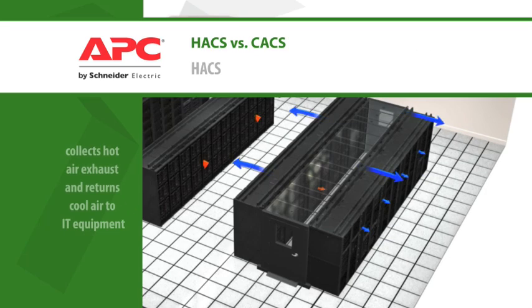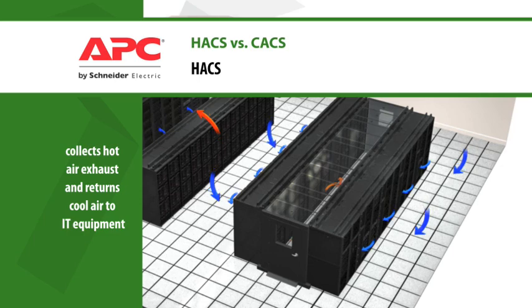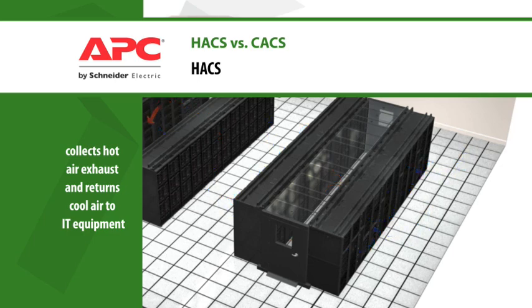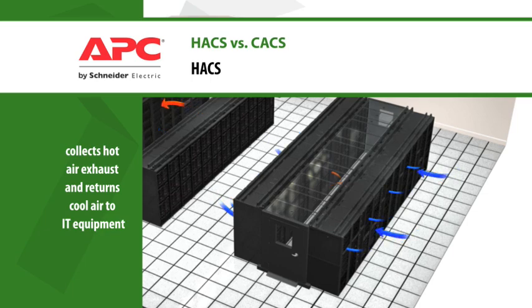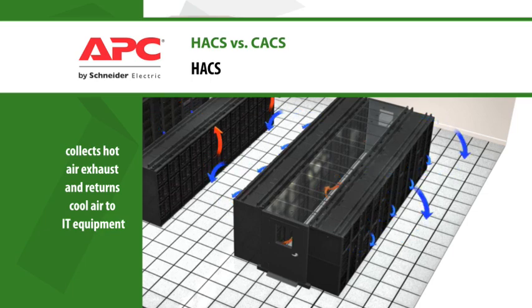The Hot Aisle Containment System isolates the hot aisle from the rest of the room, enabling the in-row cooling units to capture all the heat from the IT equipment, neutralize it, and supply cold air to the cold aisle.